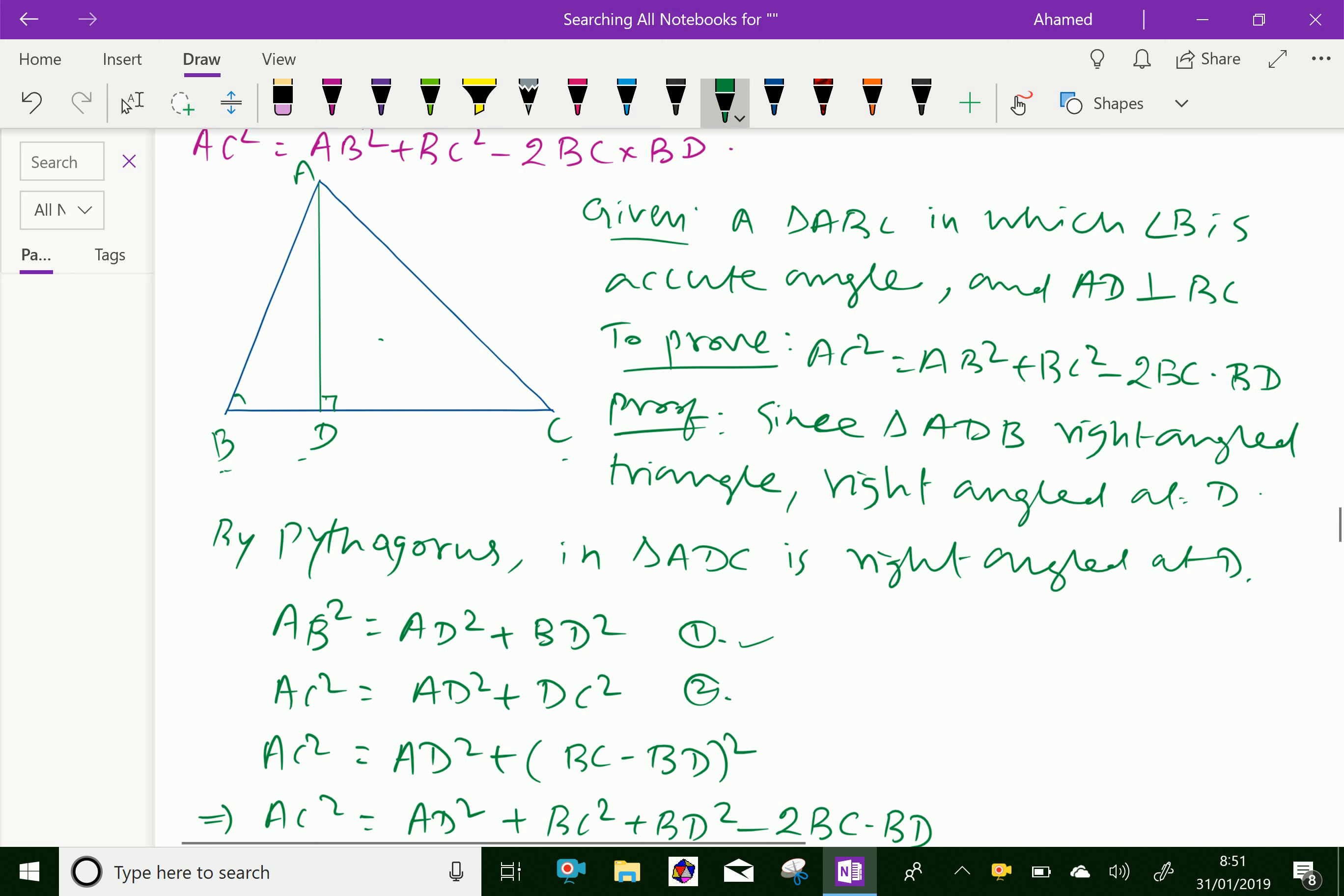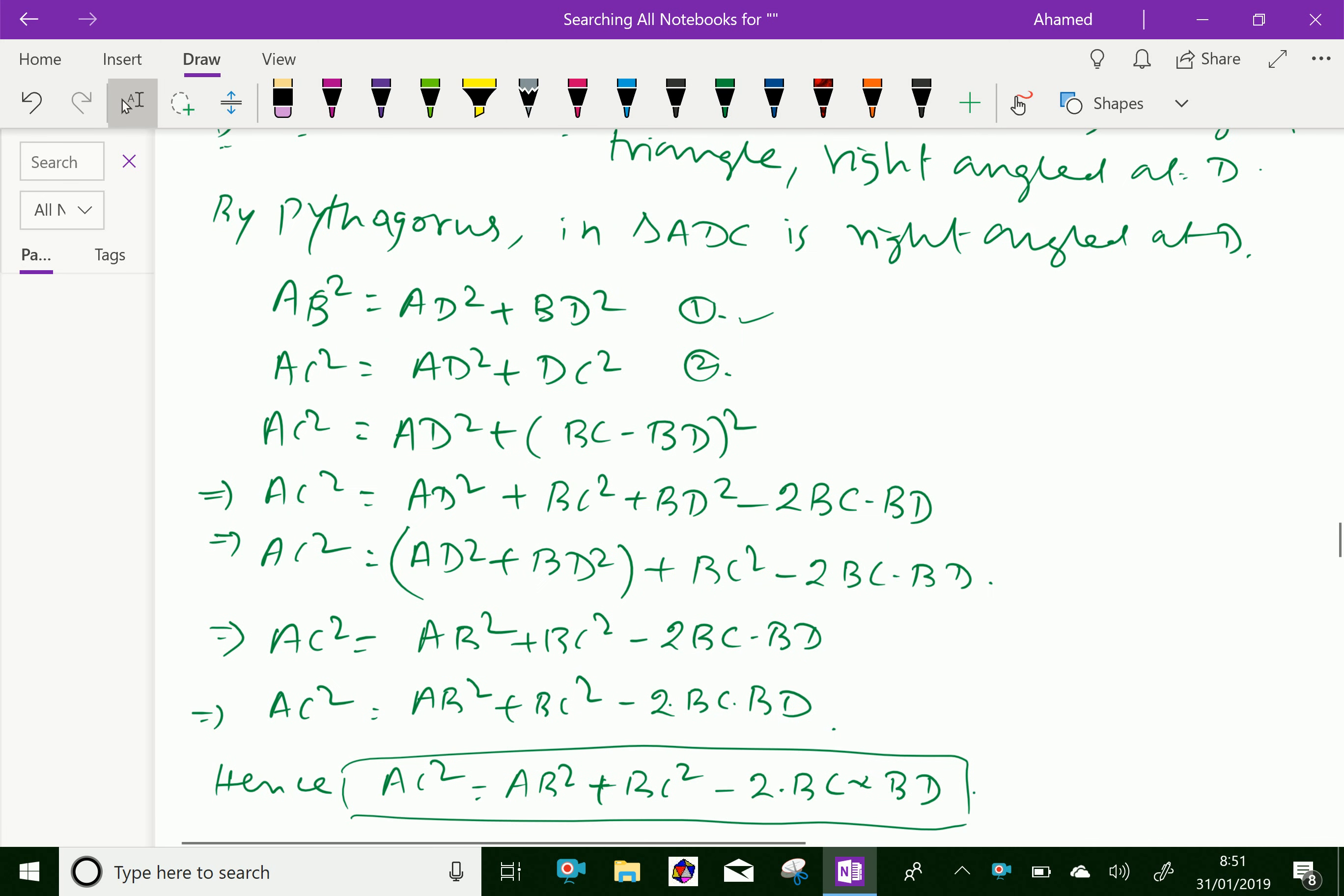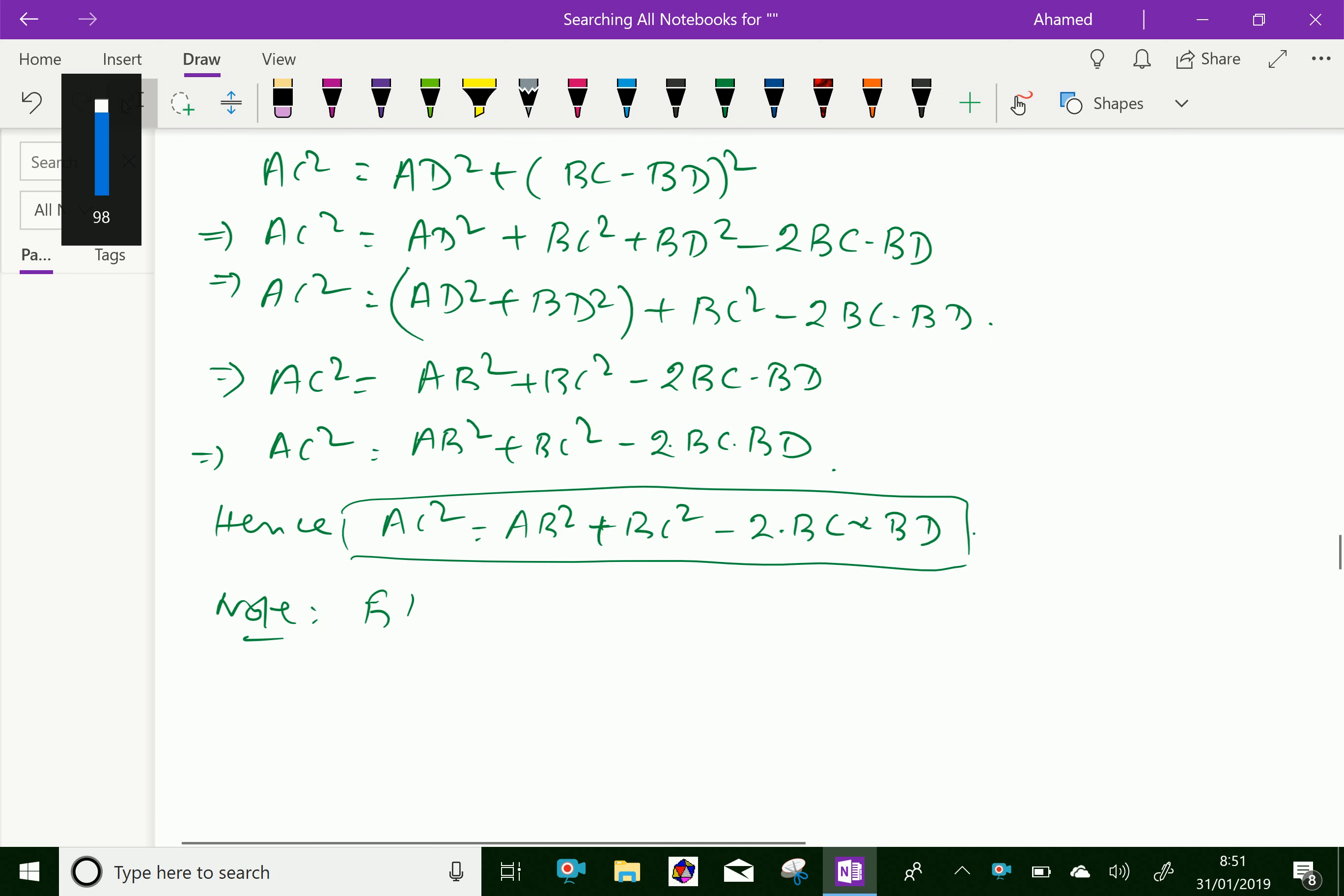And the theorem can also be stated as: In an acute triangle, the square of the side opposite to an acute angle is equal to the sum of the squares of the other two sides minus twice the product of one side and the projection of the other on the first. Here, BD is your projection.